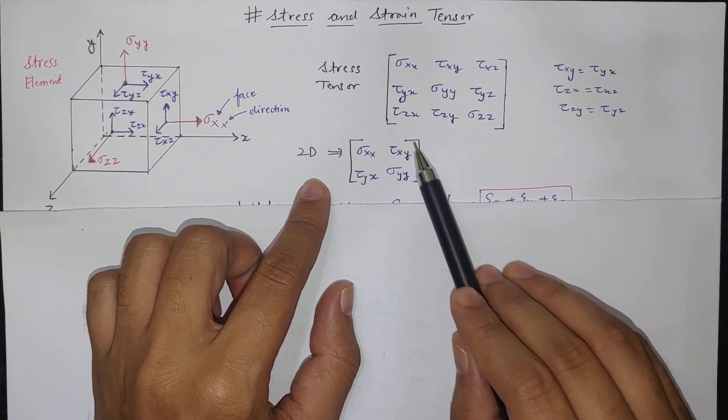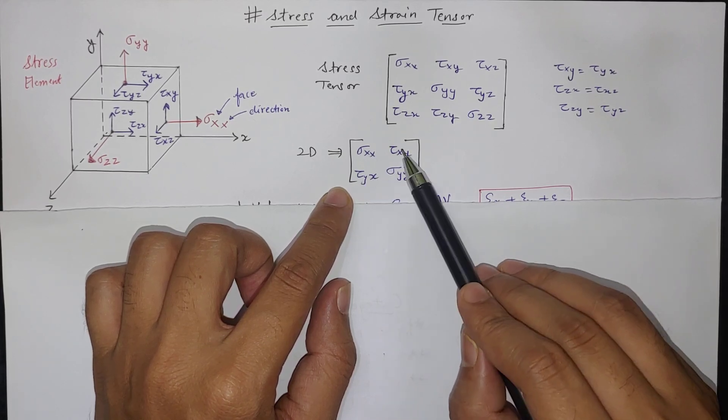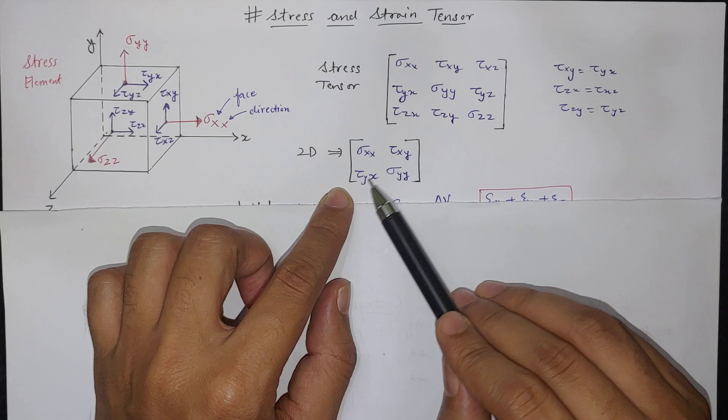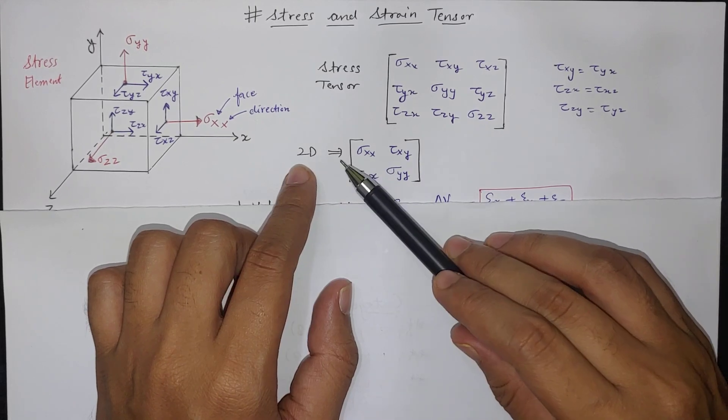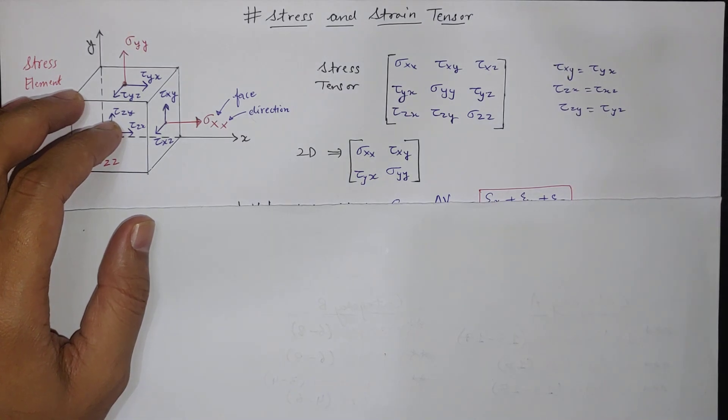In 2D it remains like X and Y direction. So normal X, normal Y, and shear on X Y and Y X planes. So this is 2D representation, this is 3D representation. So this is called a stress tensor.